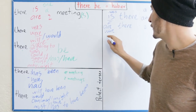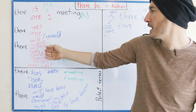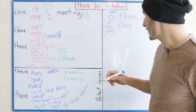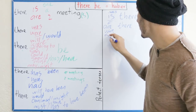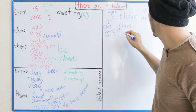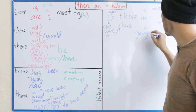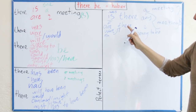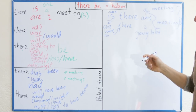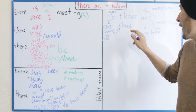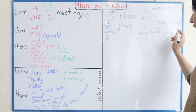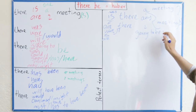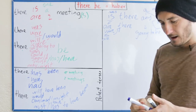¿Va a haber una reunión? Si tengo el verbo 'to be', tiene que ir antes. Is there going to be a meeting? En plural: ¿va a haber dos reuniones? Are there going to be two meetings? ¿O va a haber alguna reunión? ¿Va a haber algunas reuniones? Are there going to be any meetings? Es muy común en las preguntas que todo lo que pregunte con 'there is' y 'there are' — is there, are there, was there, were there — cuando sea más de una, o en general, utilizar el 'any'.